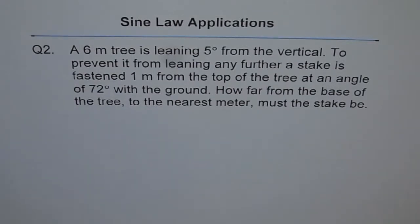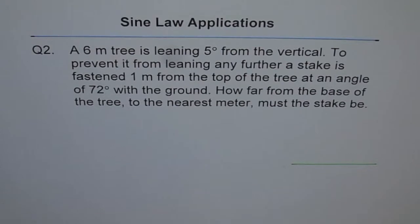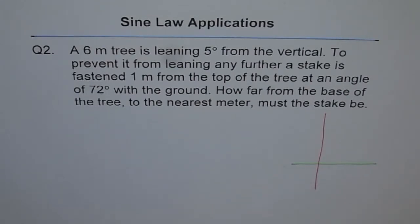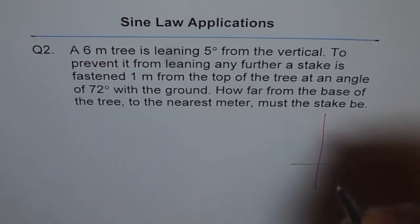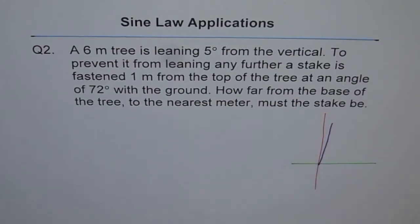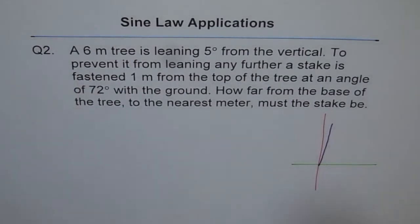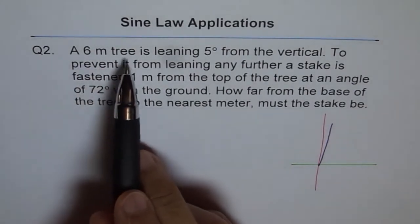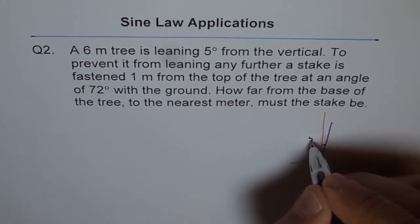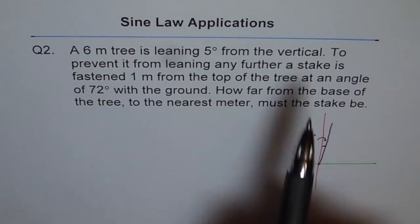First, we need to sketch a figure which reflects the situation. Let's say that is our ground and this is the vertical line. The tree is leaning at an angle of five degrees from the vertical — so let's draw that. The length of the tree is given as six meters.